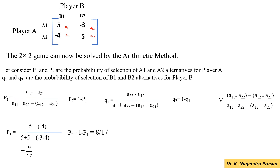And similarly, Q1 — substituting all values in the above equation — Q1 is 8/17. And Q2 is 1 minus Q1, that is 9/17.